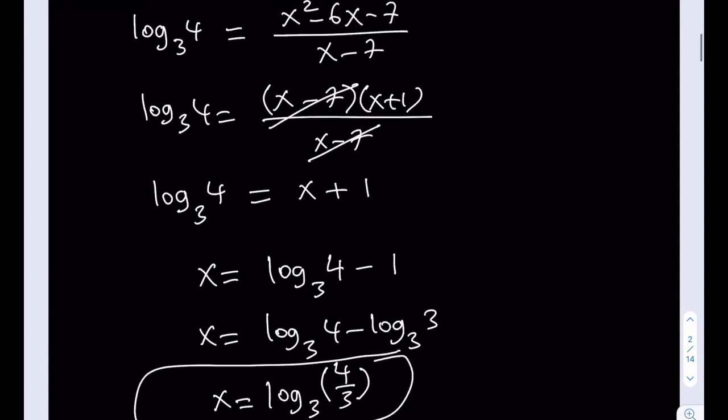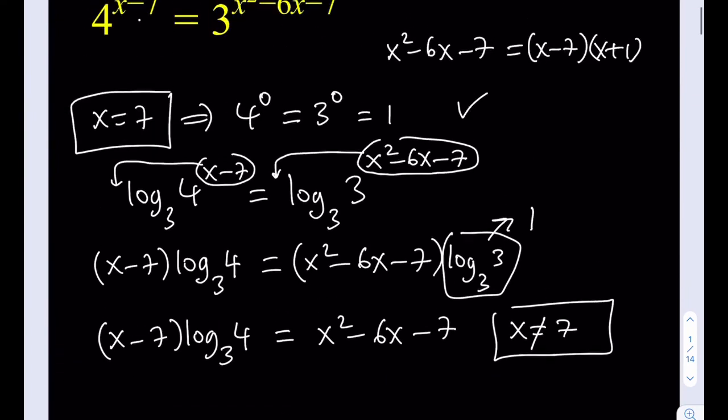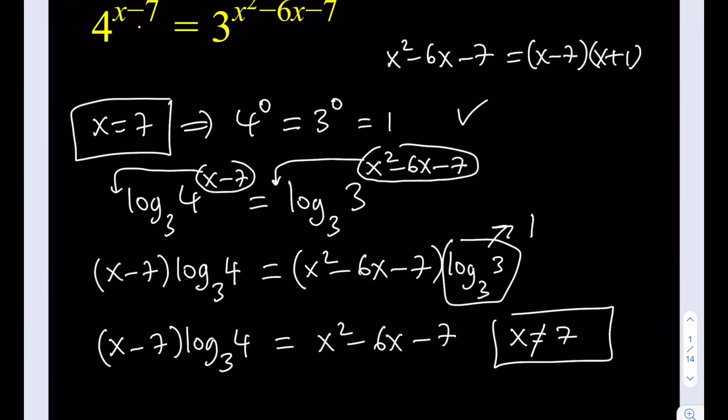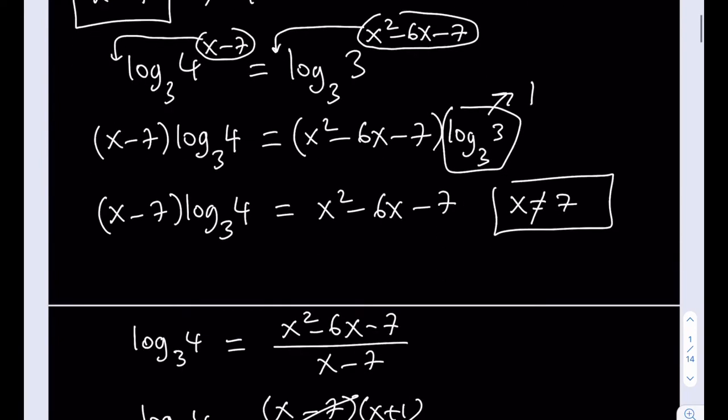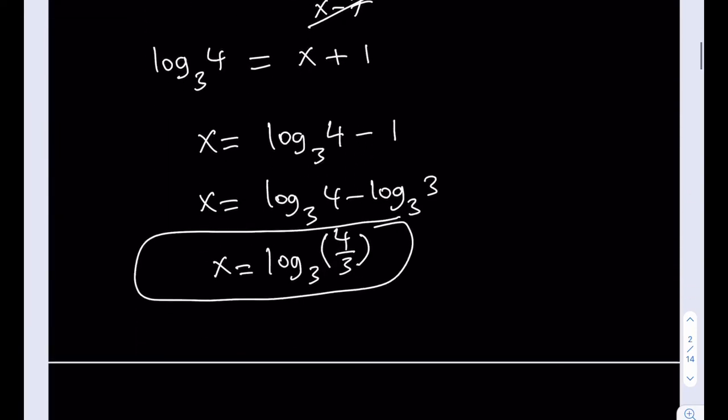And then the other solution we found initially, if you remember, we said that if x equals 7, then both sides are going to equal 1. So x equals 7 is another solution. So we basically have two solutions to this equation. One of them is an integer. The other one is an irrational number. Awesome. Thank you for watching.